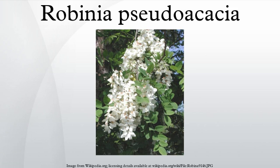Pedicel slender, half an inch long, dark red or reddish green. Calyx: campanulate, gibbous, hairy, five-toothed, slightly two-lipped, dark green blotched with red, especially on the upper side; teeth valvate in bud. Corolla: imperfectly papilionaceous, petals inserted upon a tubular disc. Standard white with pale yellow blotch. Wings white, oblong falcate. Keel petals incurved, obtuse, united below.